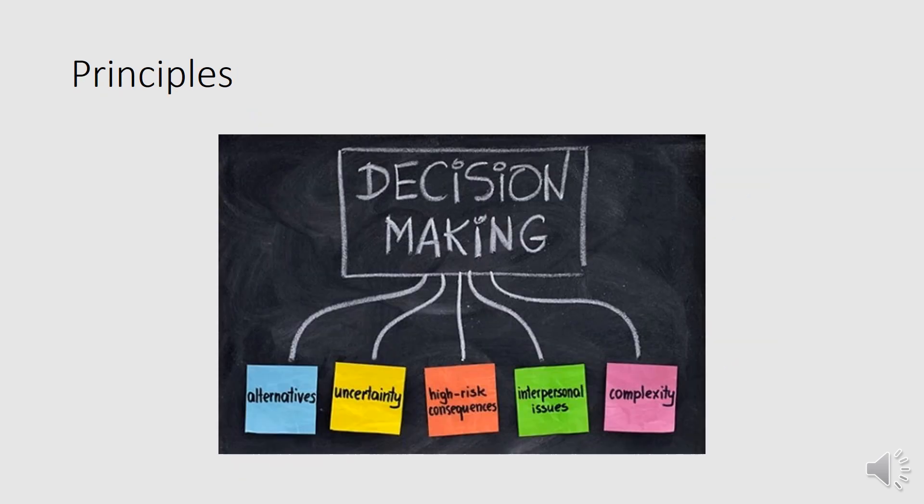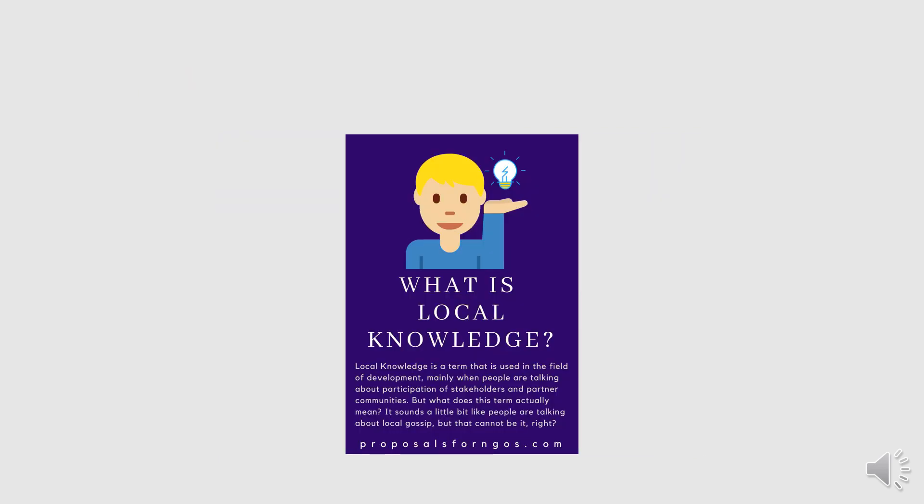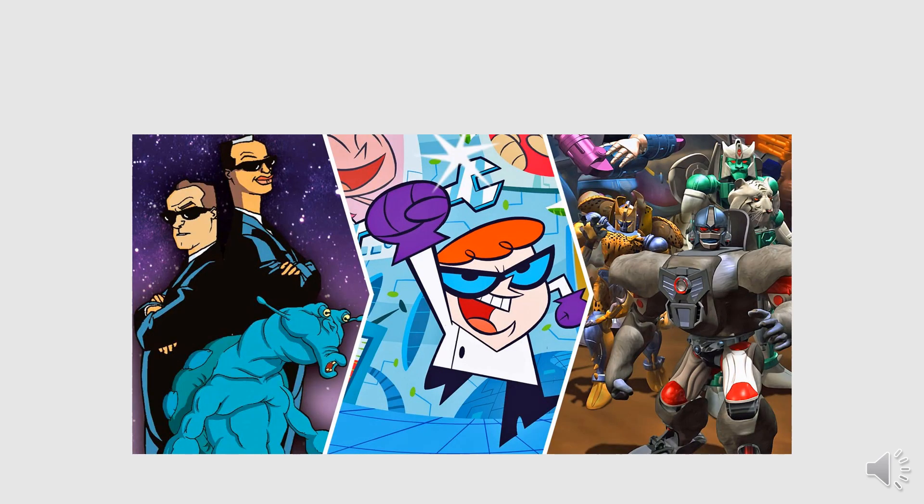The principles of participatory environmental management include: communities are active and dynamic decision-makers; communities constitute a large pool of local knowledge accumulated through daily activities; environmental management is more effective and sustainable when the community feels ownership of activities, participates actively, takes responsibility, and makes decisions; and participation involves a process of learning for all those involved.